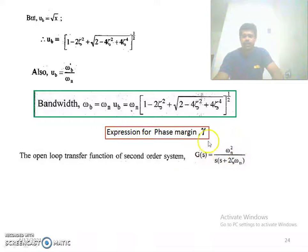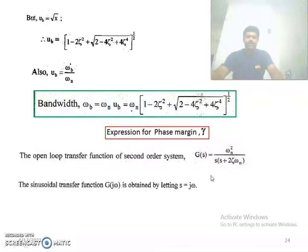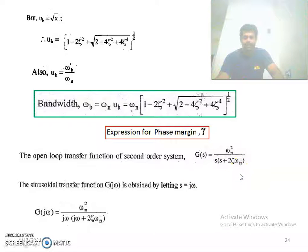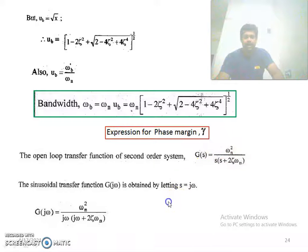The open loop transfer function G(s) = ωn² divided by s(s + 2ζωn). The sinusoidal transfer function G(jω) is obtained by putting s = jω — wherever you have s, replace it by jω. So G(jω) = ωn² divided by jω(jω + 2ζωn).